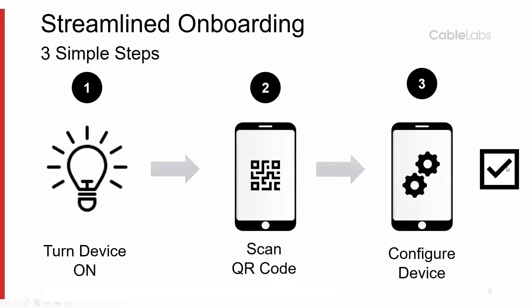The device is immediately and securely connected to the Wi-Fi network with unique credentials and is also onboarded into the IoT management ecosystem, where it is ready for further configuration and use. With the single action of scanning a QR code, the end user is able to take a device from out of its box to being configured and operating within seconds.